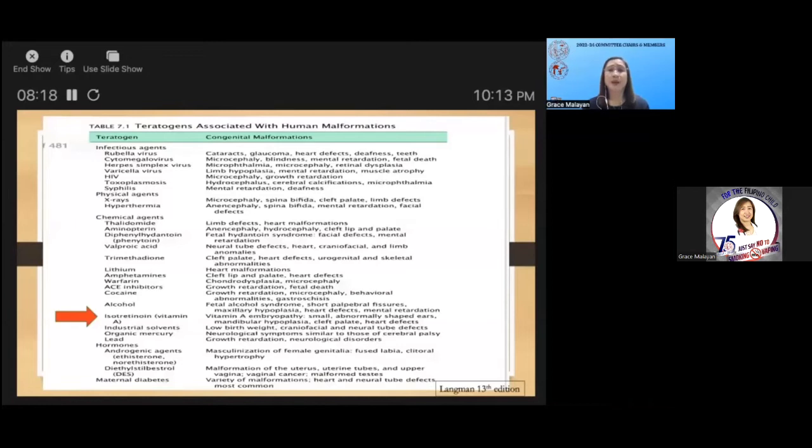These are examples of teratogens associated with human malformations: infectious agents, chemical agents, physical agents, and even maternal conditions that can affect the developing embryo. It is interesting to note that isotretinoin or vitamin A, a solution often used for beautification and skin peeling, can lead to severe congenital formation such as vitamin A embryopathy, characterized by small baby, abnormally shaped ears, mandibular hypoplasia, cleft palate, and heart defects. If the moms of our patients are using this, we should guide them that if they use isotretinoin, it is their responsibility to avoid pregnancy a month before, during, and even a month after treatment.